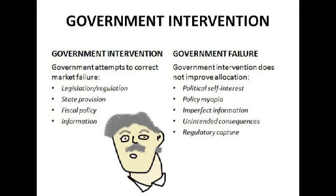Government failure is when government intervention doesn't improve allocation. If you're a free market economist you'll believe government failure is inevitable. Political self-interest is one cause — parties do things that aren't actually beneficial for the economy as a whole, only beneficial in the short term. That's policy myopia too — when you have a short-term solution for a long-term problem, particularly used by parties before elections.